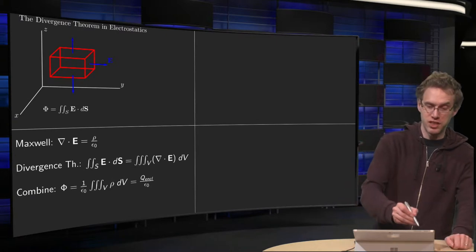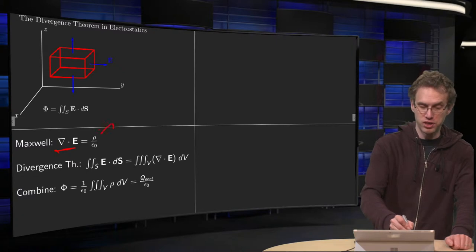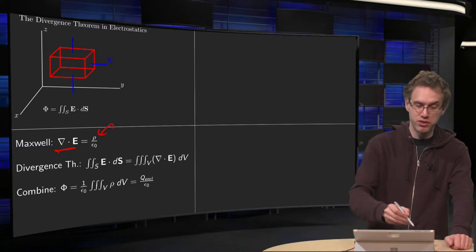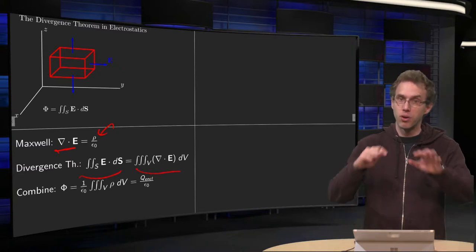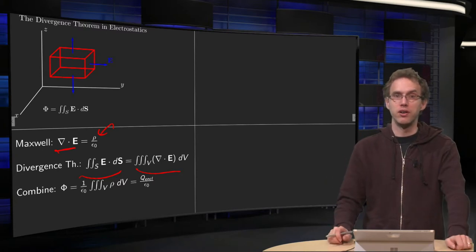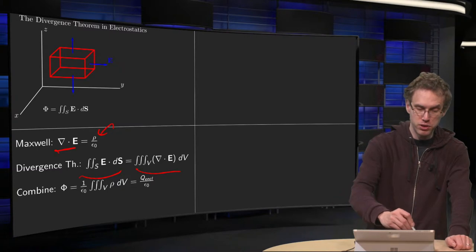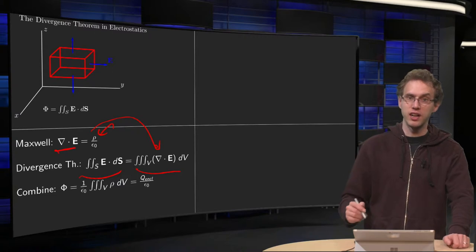Well, we know Maxwell's equation, which states that the divergence of the electric field equals charge density divided by epsilon zero, and we know the divergence theorem, which states that the flux equals the integral across the total solid V of the divergence of E. Then we substitute this divergence of E equals rho over epsilon zero on the right hand side.